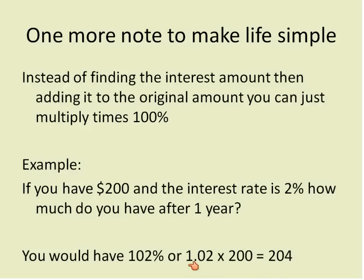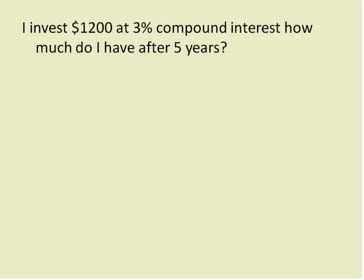The change here is that instead of multiplying times 0.02, we're multiplying times 1.02. Multiplying times 1 is just the same as getting the original amount — 200 times 1 is 200. So going forward we'll multiply by 1.02 instead of 0.02, and it will give us the amount of interest plus the initial principal that we had invested.